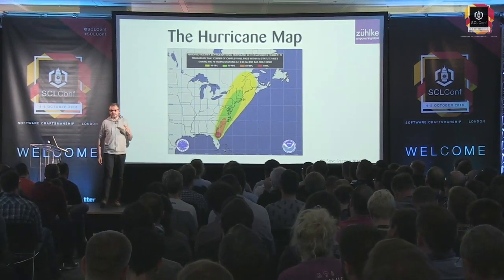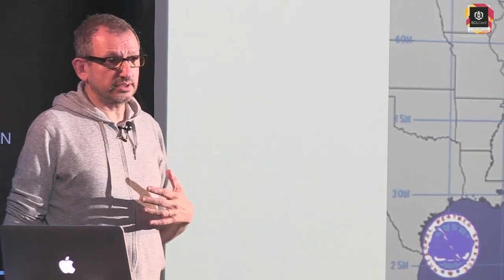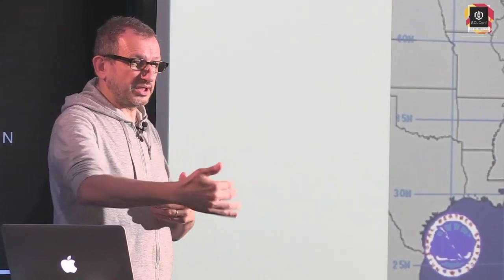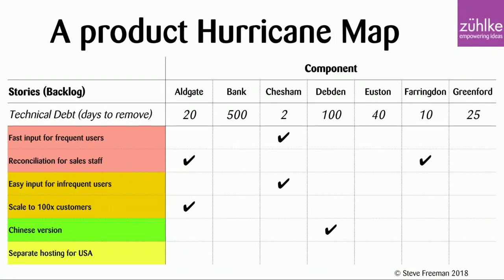In the early days of Agile, we used to pitch that we could go wherever you want — give us enough time and we can refactor a payroll system into an airline ticketing system. But in practice, most organizations don't operate like that. For most of us, there is a bit of a roadmap; you kind of know where you're going. So we can start to think about a product hurricane map. Imagine this is your backlog — immediate to too far away — and across here we have a number of components. These ticks are where, when we have to do a feature, we have to go into this component. And across the top is technical debt — rough analysis of how long cleanup would take: 20 days, 500 days, 2 days, 100, 40, whatever.